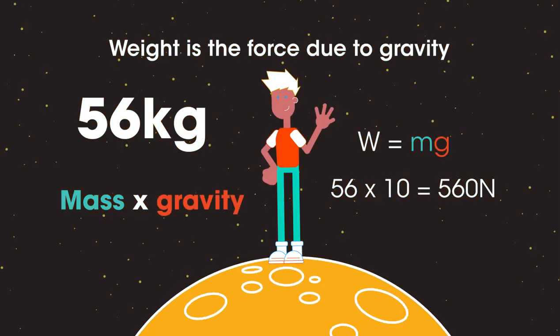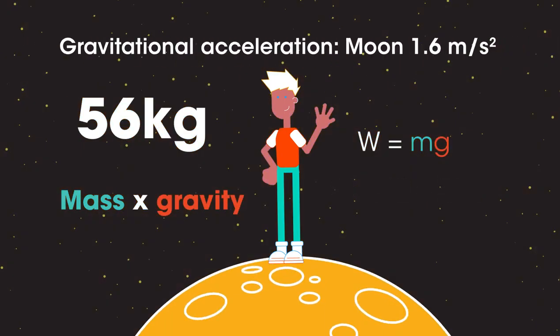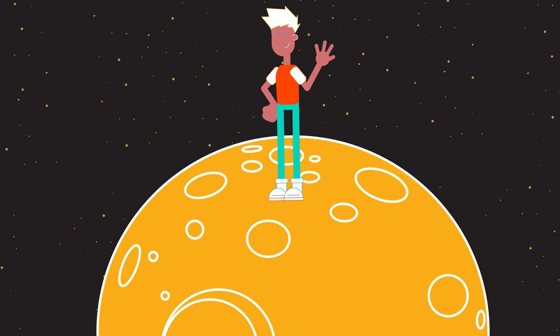But what about on the moon? The gravitational acceleration on the moon is only 1.6 meters per second per second. I hope you got 89.6 newtons. So you would feel very light on the moon, and if you try to walk, each step would send you leaping away from the surface.